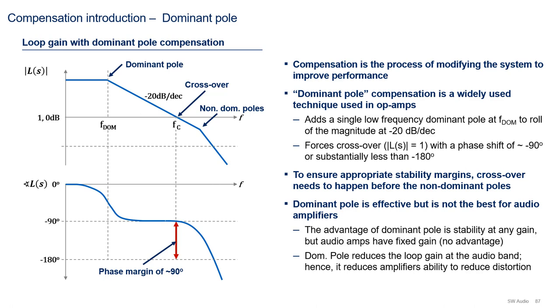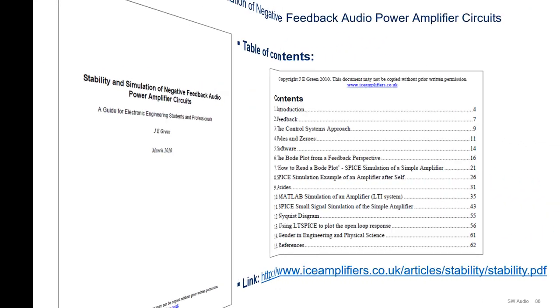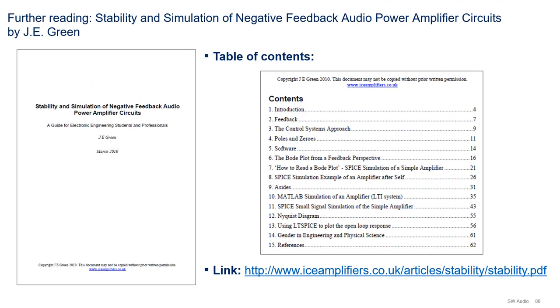We will cover more on the topic of compensation later on. We will cover the Miller implementation of compensation, plus advanced compensation techniques like 2-pole, TMC, OITPC, etc. If you are interested in the topic of negative feedback in audio amplifiers, you can find further reading material in Green's paper, Stability and Simulation of Negative Feedback Audio Amplifier Circuits. For reference, I have put the table of contents so you can see what's in the paper. The link to this paper is below and is also in the description of the video.